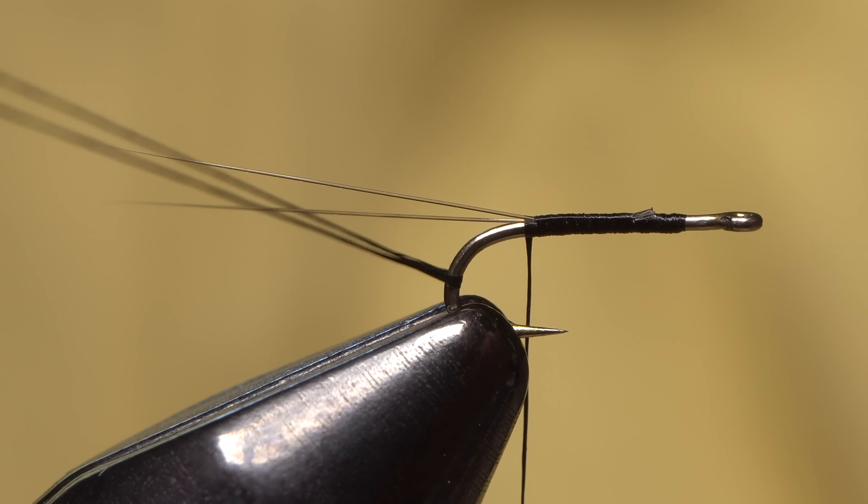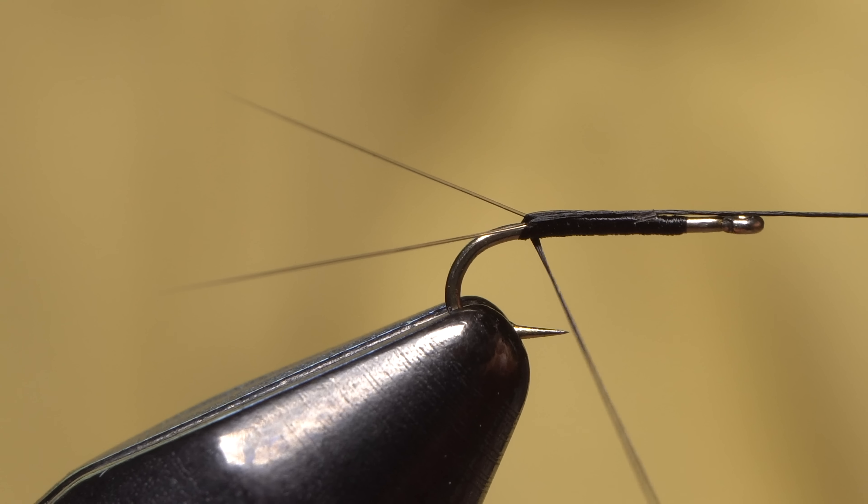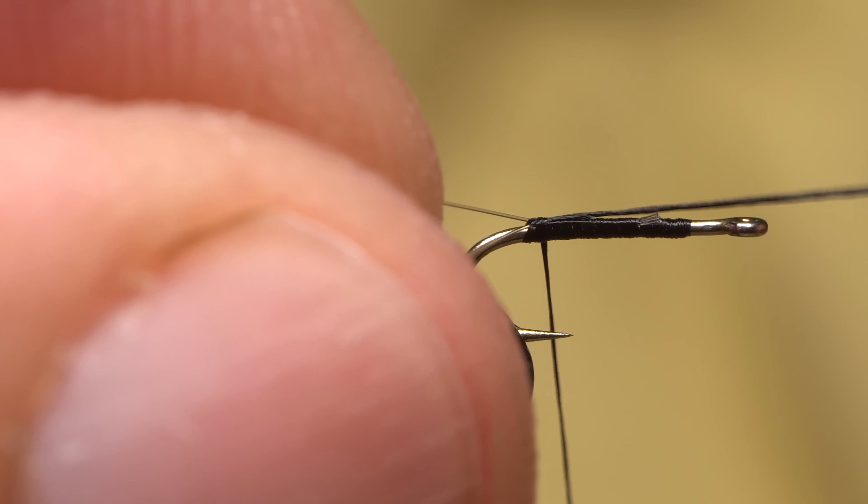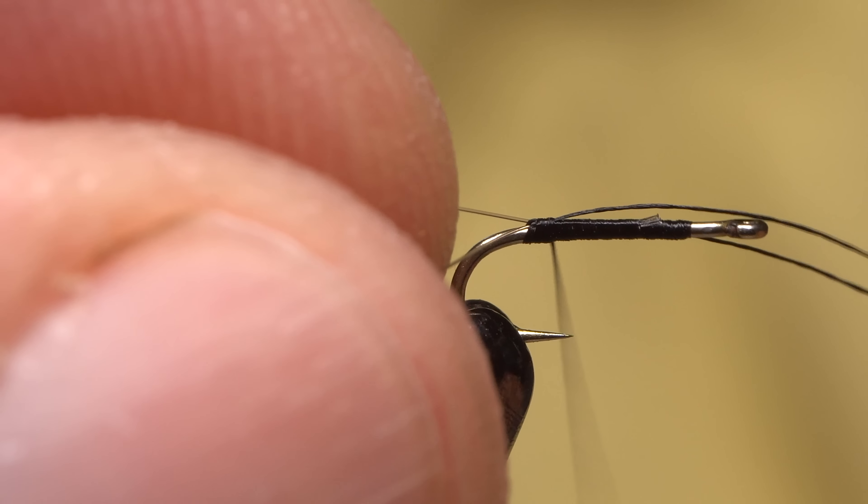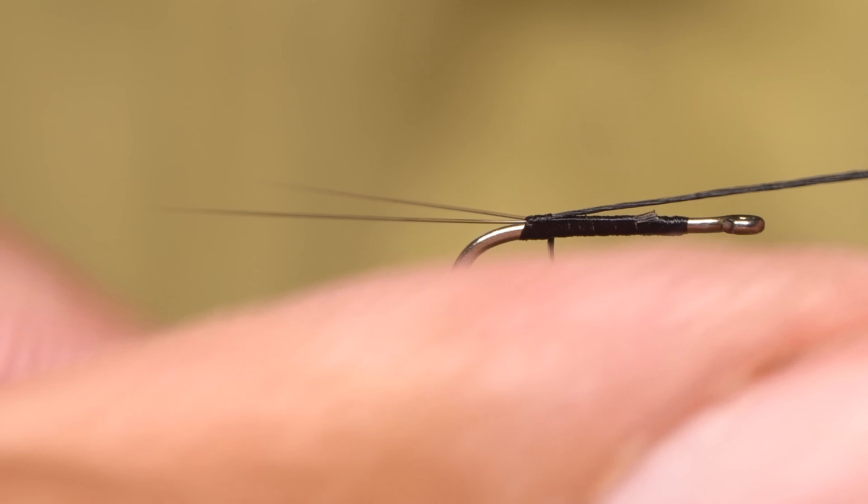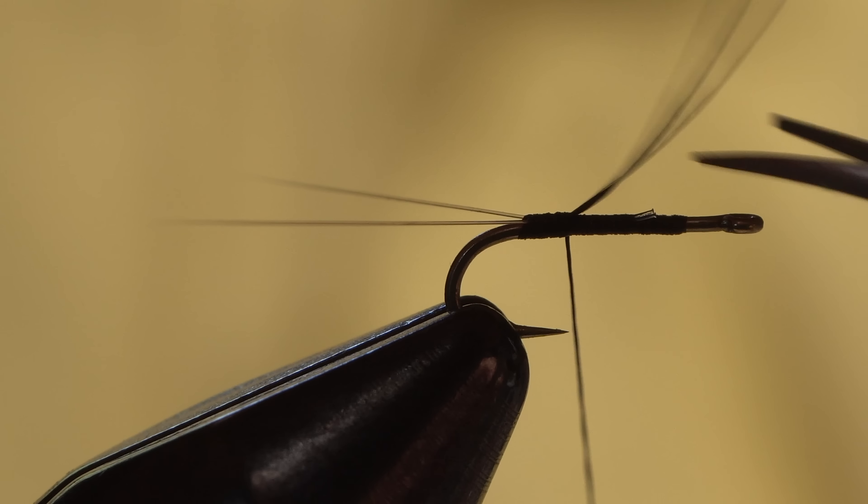Pick up that tag end of thread you stashed away and fold it into the hook bend like so. Then pull it around and forward between the two tails and take a thread wrap or two to lock it down on top of the hook shank. By pulling on both legs of the thread tag, you can increase the angle between the two tails.